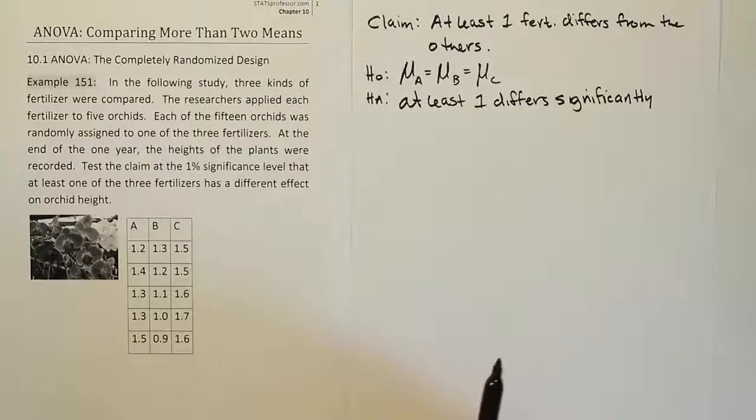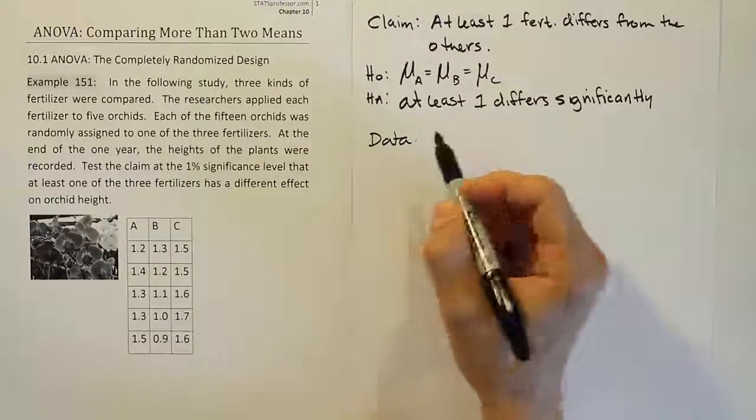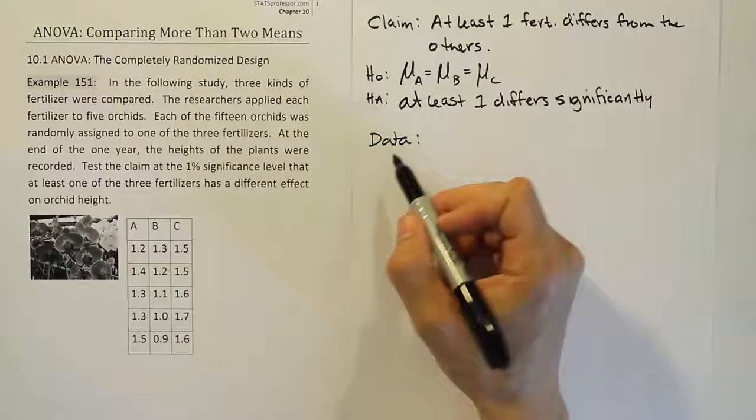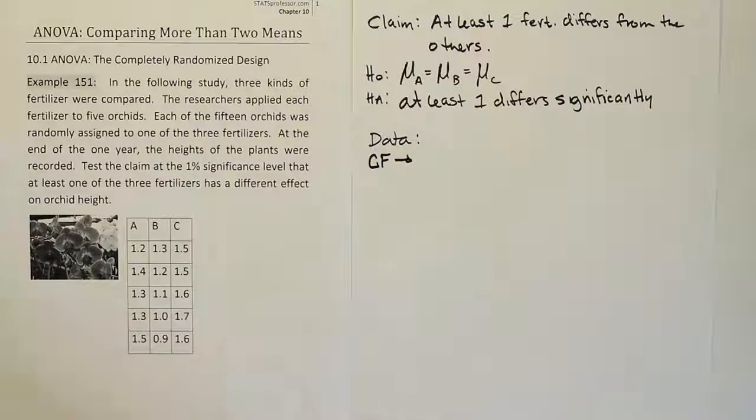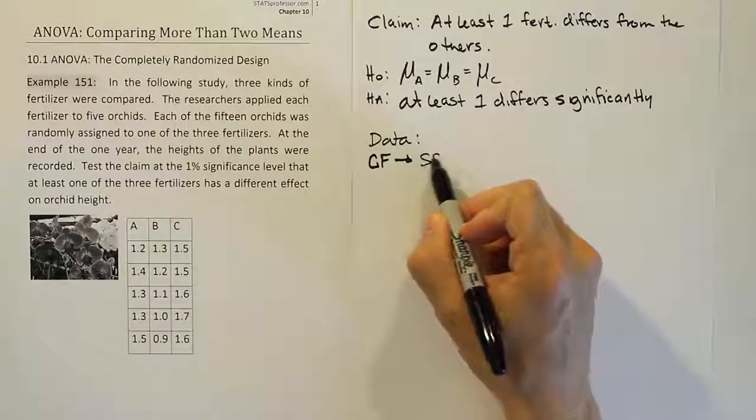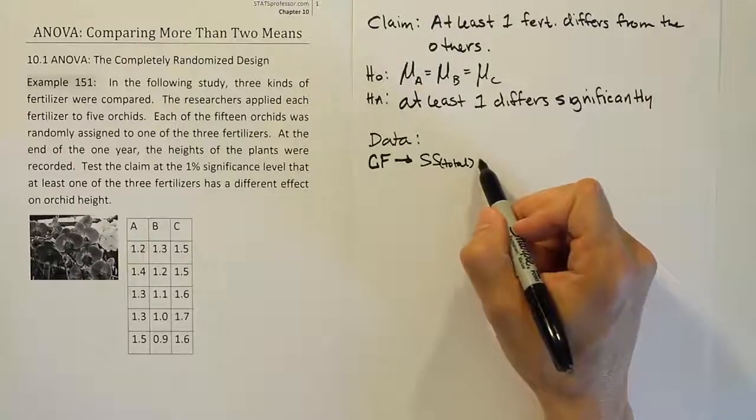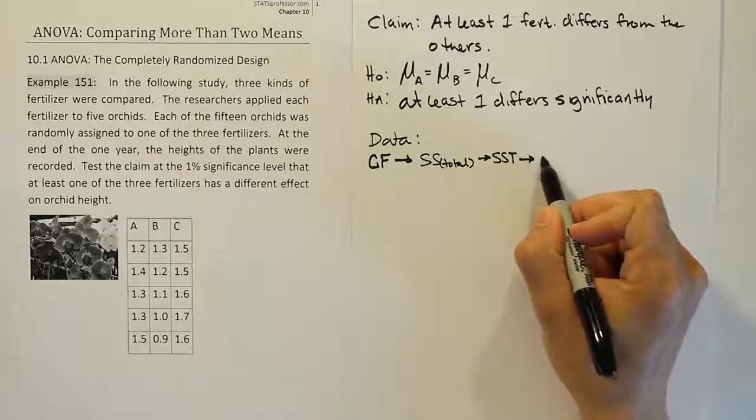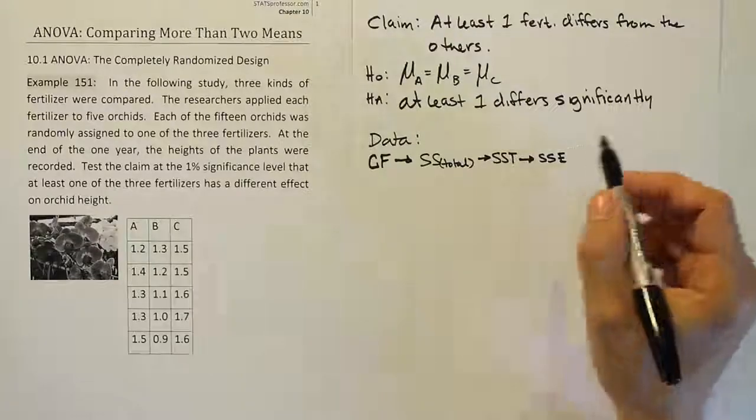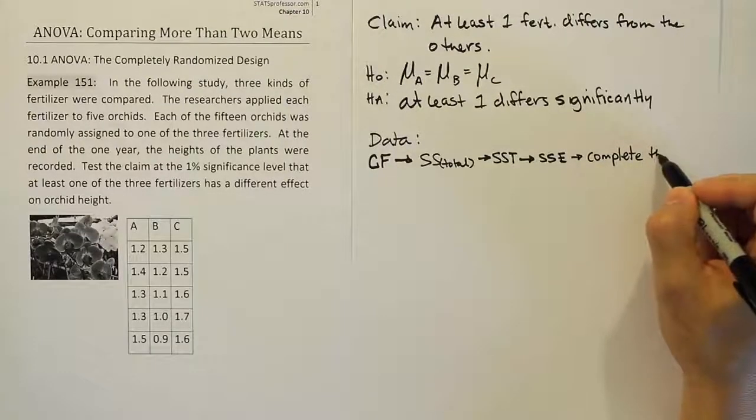Alright, so there's your H0 and your HA. You have your claim, your H0, HA. We normally do the data step here. Now the data step here, usually it's something simple. We just write down all the numbers. In this problem, it's the hard part. The data step is what takes forever. So what I want to do first is just give you a broad strategy for doing the data step, just to tell you how you should work out the problem. So what I want you to do is to get the correction factor first.